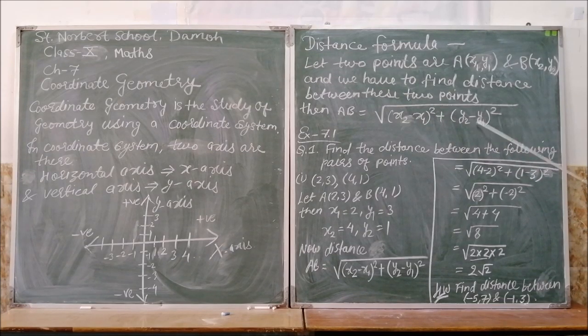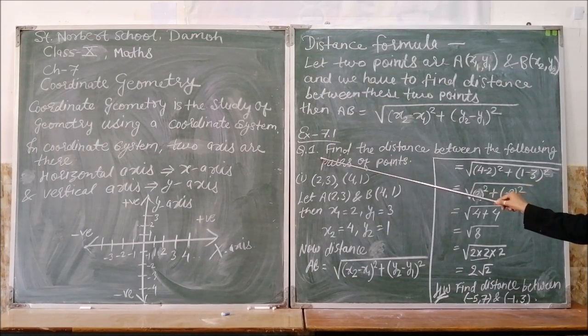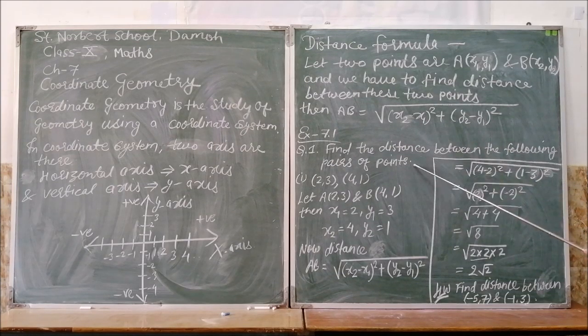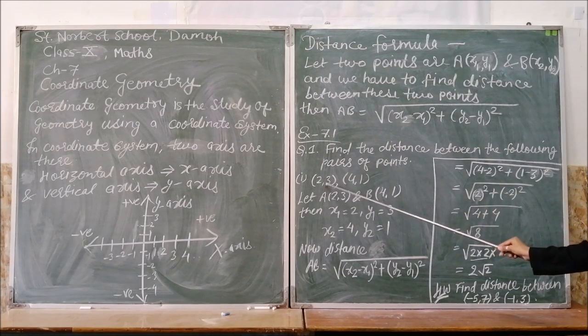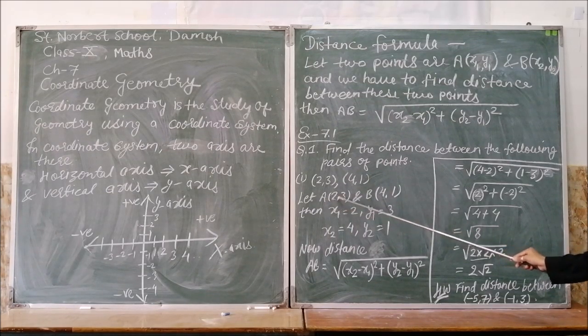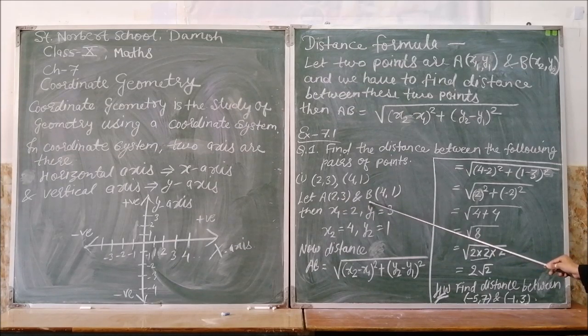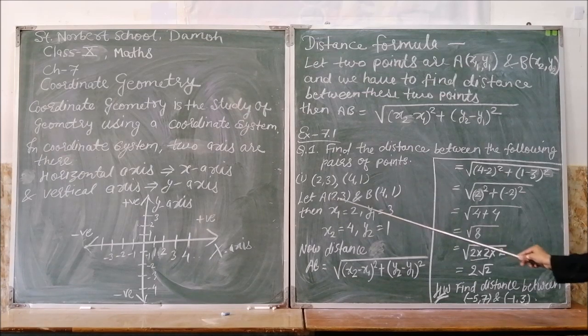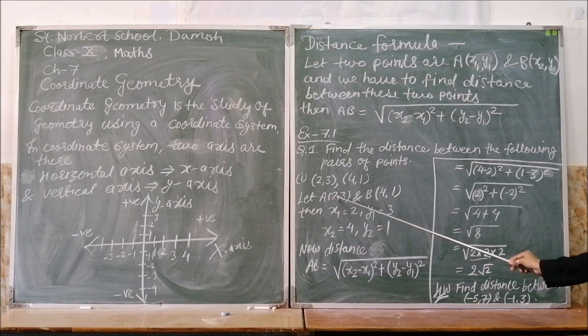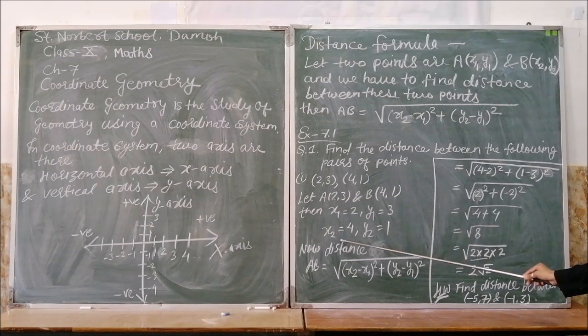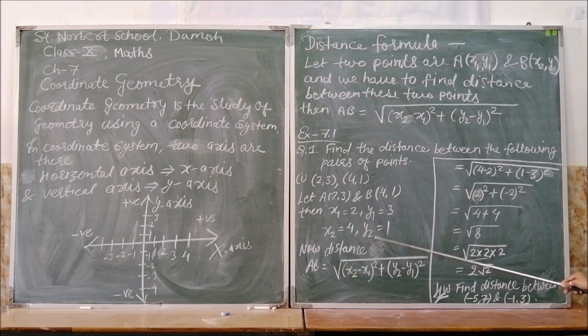Exercise 7.1, Question Number 1: Find the distance between the following pairs of points. First pair is (2, 3) and another pair is (4, 1). Let first pair be point A(2, 3) and another point B(4, 1). On comparison with x1, y1, x2, y2, we will get x1 equals 2, y1 equals 3, and x2 equals 4, y2 equals 1.